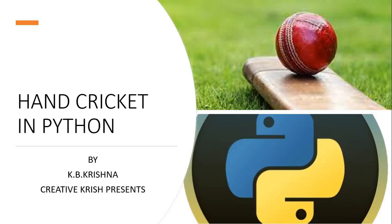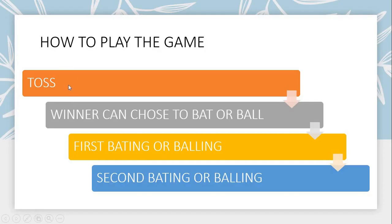Hello guys, welcome to Creative Krish. In this series of videos, we'll see how to make hand cricket in Python. First, let's see how we play hand cricket normally with our friends. We have a toss—we ask our friend odd or even, they choose, and we each get a number which we sum.